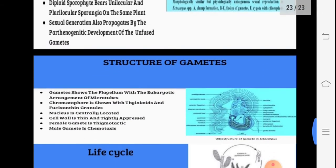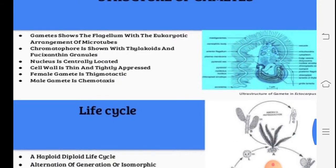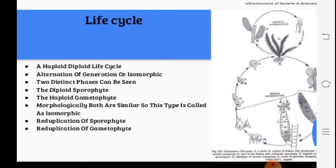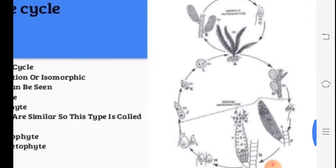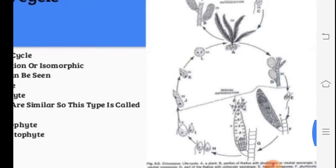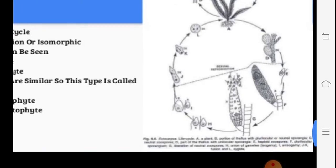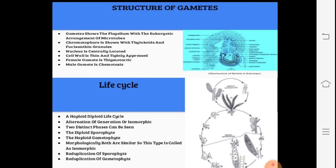The gametophyte structure is very typical — chromatophores are present, the cell wall is very tight, and it shows the female gamete and male gamete developing. In the Ectocarpus life cycle diagram, both sexual and asexual reproduction are shown; unilocular and plurilocular sporangia both develop, zygote forms, and diploid thallus formation occurs.